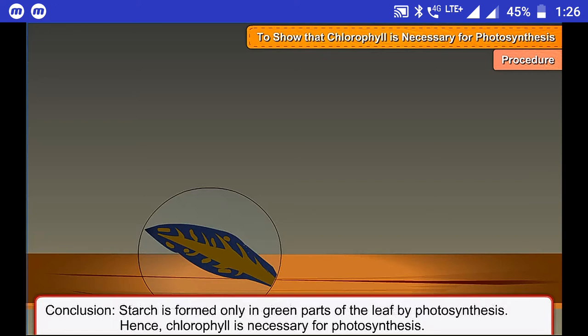Conclusion: Starch is formed only in green parts of the leaf by photosynthesis. Hence, chlorophyll is necessary for photosynthesis.